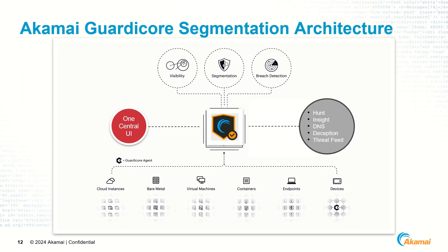Let's take a look at the high-level architecture. How does Akamai GuardiCore segmentation secure the network? We start by deploying lightweight agents. Here's a simplified high-level architecture showing agents at the bottom, connected to the management server, Akamai threat feeds, Hunt and other add-ons, and one central user interface to manage and administer the solution.